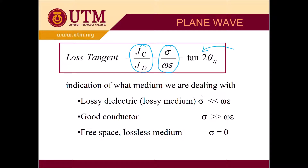For the lossy dielectric, we have a small value of sigma. When we have a small value of sigma, that means there is a leakage conduction current, so it has a loss. When there is a conduction current, there is a loss — for example, loss in terms of heat energy. For the lossy dielectric, sigma is not zero but is very small compared to omega epsilon. For example, FR4, normally used to design planar antennas, has a loss tangent of around 0.02, which is very small.